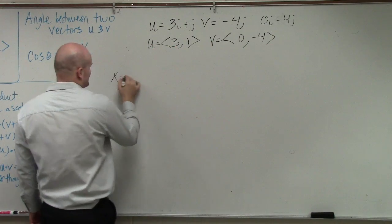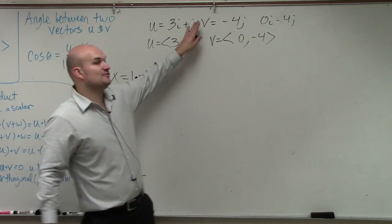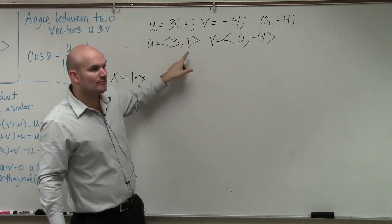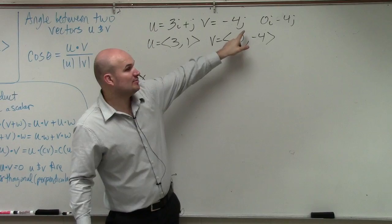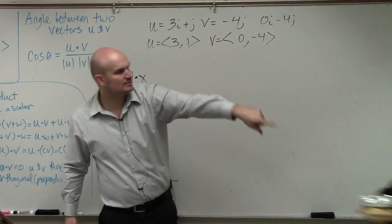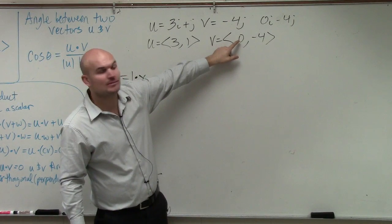If I have x, that's the same thing as 1 times x, correct? So if you have just a j, remember there's a 1 in front of there. When you're writing it in component form, make sure you're putting a 1 there. If you don't even have a variable, you have to represent that with a 0.